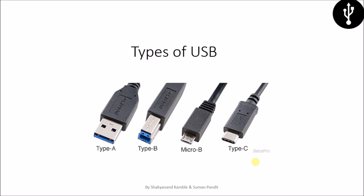There are various types of USB: Type A, Type B, Micro B, and Type C. For the current generation of phones, we know that Micro B USB is used, and Type C will be the next generation type of USB.